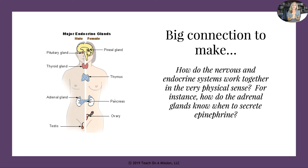Here is a big connection you've got to make between the last video and this one. This is a question I want you to reflect on individually — jot it down in your notes and then talk about it in class. How do the nervous and endocrine systems work together in a very physical sense? For instance, how did the adrenal glands know when to secrete epinephrine or adrenaline? Go ahead and pause, reflect on that question, get it answered in your notes, and be ready to talk about it in class.